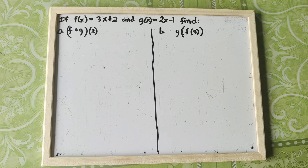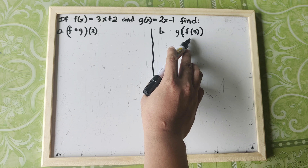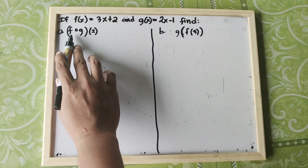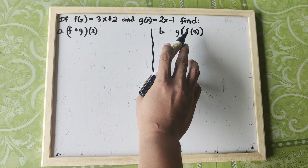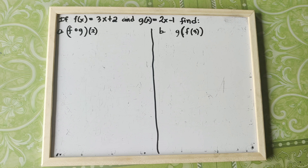Let's discuss another example of composition of functions. If F of X is equal to 3X plus 2 and G of X is equal to 2X minus 1, find F composed with G of 2, and G composed with F of 3. Note that we also have a value of X — 2 and 3 — so this is a combination of composition of functions and evaluation of functions. First apply the composition, then substitute the value of X.